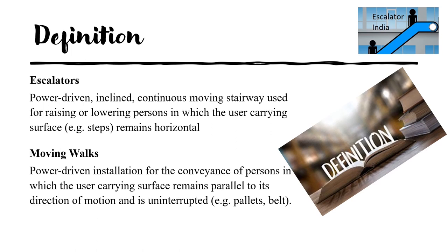Now we are going to see the definition of escalators. An escalator is nothing but a power-driven inclined continuous moving stairway for raising or lowering people. For example, we have steps in our building — those steps are a fixed structure. But the escalator converts those steps into a moving structure at a certain degree of inclination, which carries people up or down depending on the requirement. So an escalator is a moving stairway: a stairway is a stationary one and an escalator is a moving stairway where the steps move up and down.